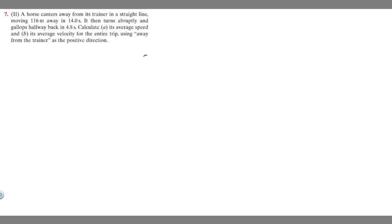So let's say this is going to be the trainer, and we know the horse is going to go in a straight line moving 160 meters away in 14 seconds. So it's going to start here, and then it's going to go this way, 116 meters. And the amount of time this took was 14 seconds. So I'm just going to label 14 seconds like this. And then we know it turns abruptly, so I'm just going to make it do a turn like this. This is a negligible distance, so just pretend it's zero.